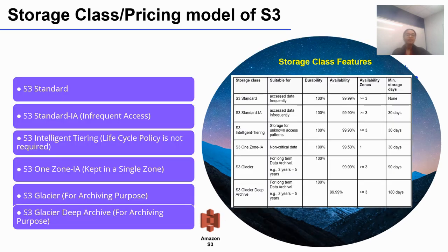S3 has six commonly used storage classes. Pricing depends on its durability, availability, retrieval time, minimum storage days, and frequency of access patterns. For high availability and fault tolerance of S3 data with immediate access, you should pay more by putting data in S3 Standard. For infrequent access, the S3 Standard-IA, or infrequent access storage, costs less and is cheaper than S3 Standard.